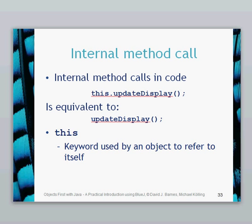On an internal method you can use it without the this keyword, but I'd probably get into the habit of using the this keyword because it just keeps everything nicely clear. The this keyword is used by an object to refer to itself — it's the object effectively referring to itself and calling a method on its own. So those are internal method calls.